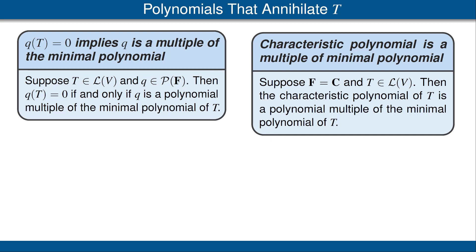One more comment: if you choose an operator at random, it's most likely that the characteristic polynomial and the minimal polynomial are equal — in fact, that happens almost all the time. Thus, the fastest way in practice to find the characteristic polynomial is to first find the minimal polynomial. If the minimal polynomial has degree n on a vector space of dimension n, then it equals the characteristic polynomial. If not, one can use other methods.